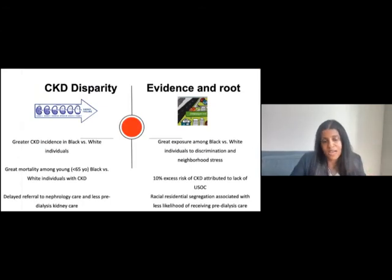It's important to understand how well-described disparities in kidney disease have root causes with strong evidence-based links to structural and interpersonal racism. Consider the greater mortality noted among young Black versus white individuals with CKD. There's some 10% excess risk of chronic kidney disease attributed to lack of usual sources of care.